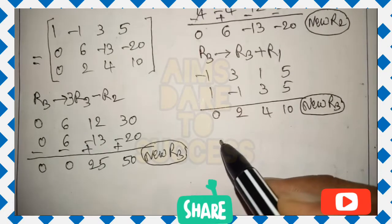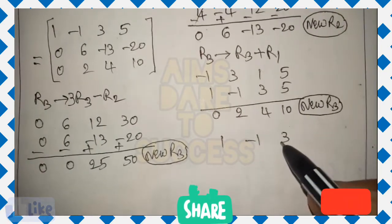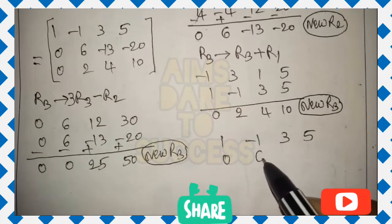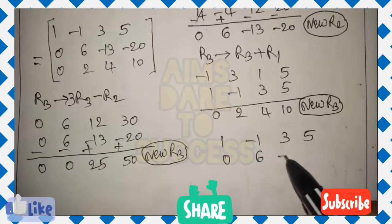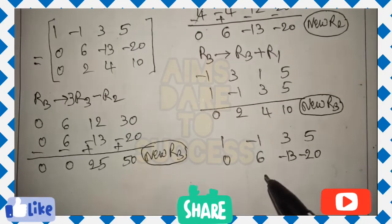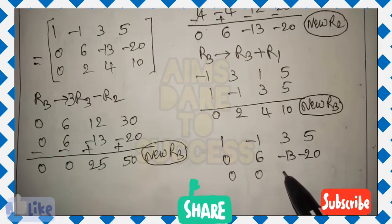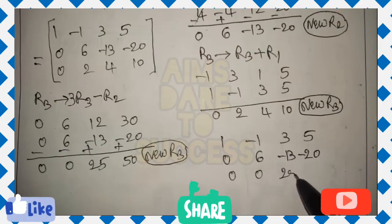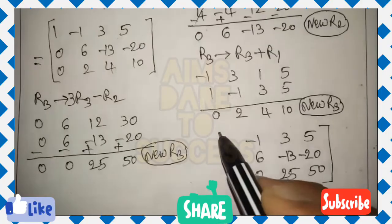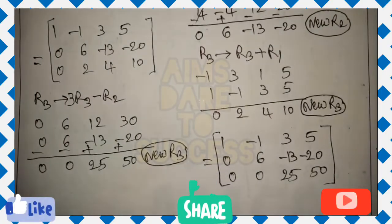Rewrite the new matrix. R1 and R2 remain the same: 1, minus 1, 3, 5 and 0, 6, minus 13, minus 20. New R3 is 0, 0, 25, 50. We have reached the L-symbol target form with 1, 0, 0 pattern achieved in the lower triangle.